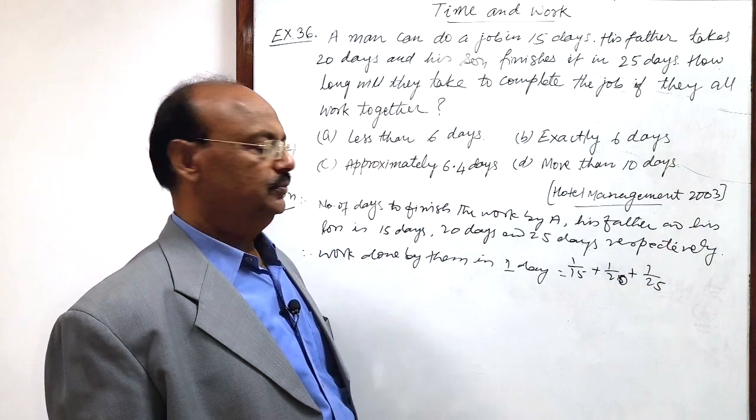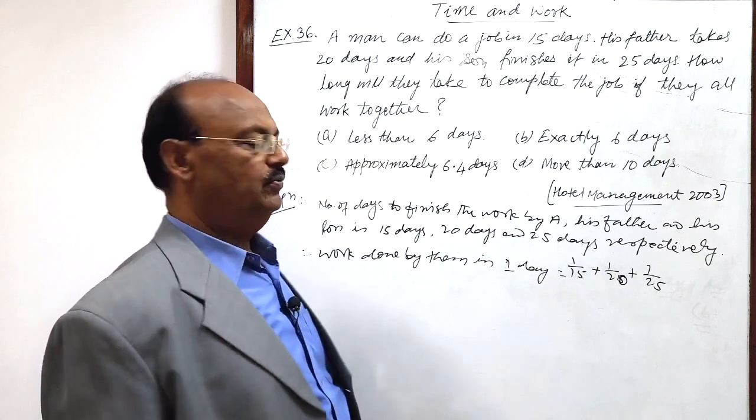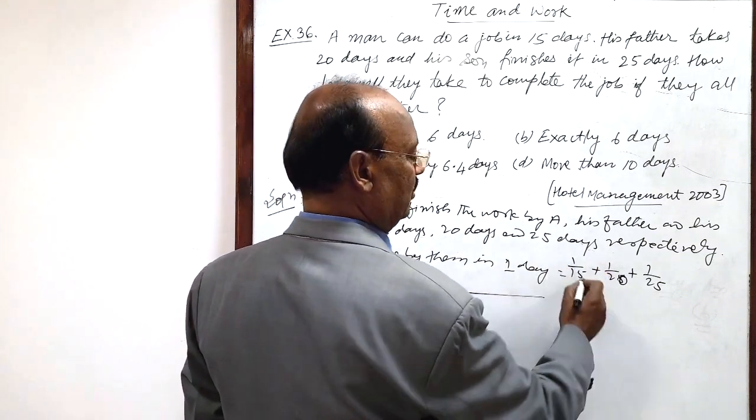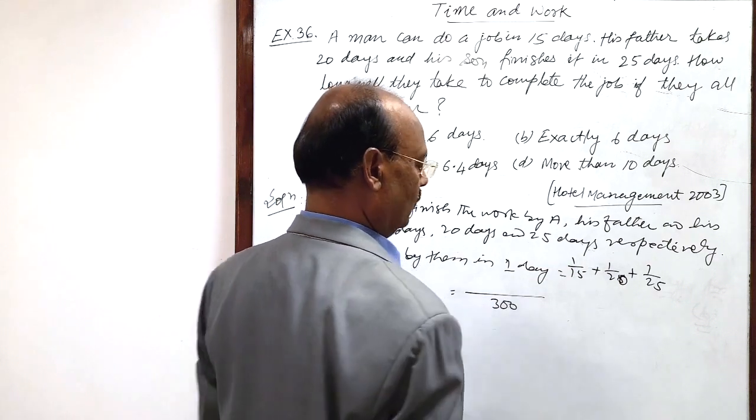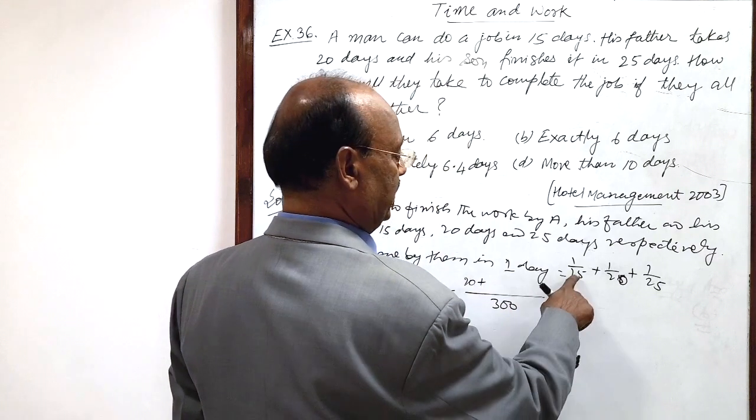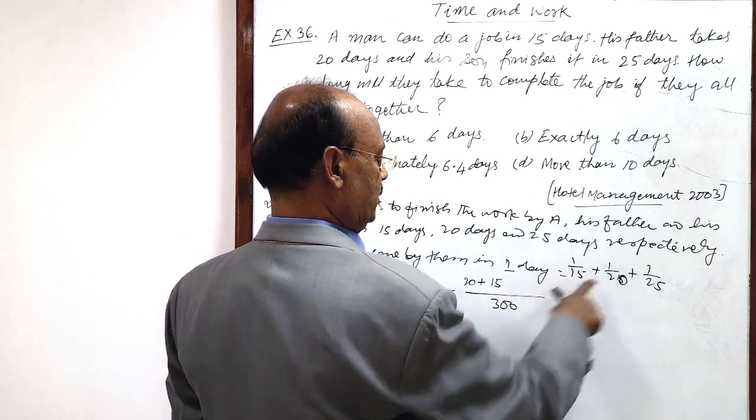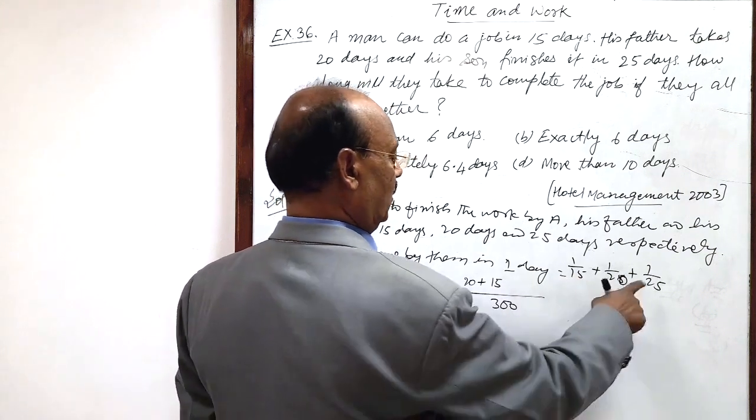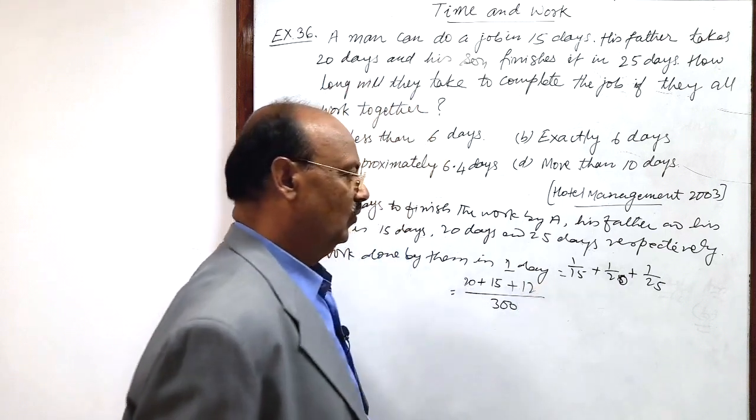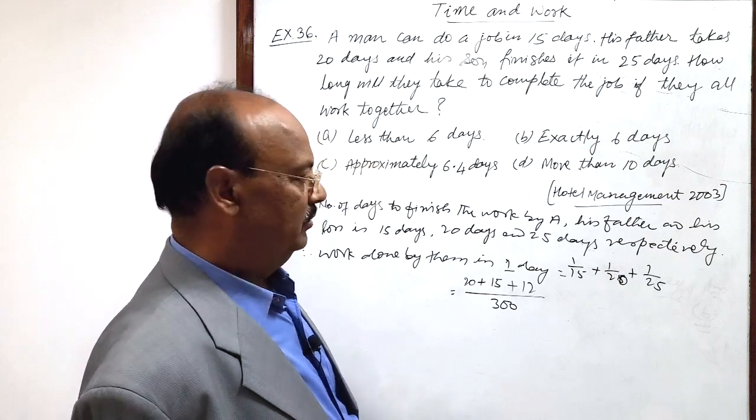Amount of work done is reciprocal of the number of days required to finish this work. Let us simplify it, here LCM will be 300. So, here 15 into 20 is 300 and 20 into 15 is 300 and 25 into 12 is equal to 300.